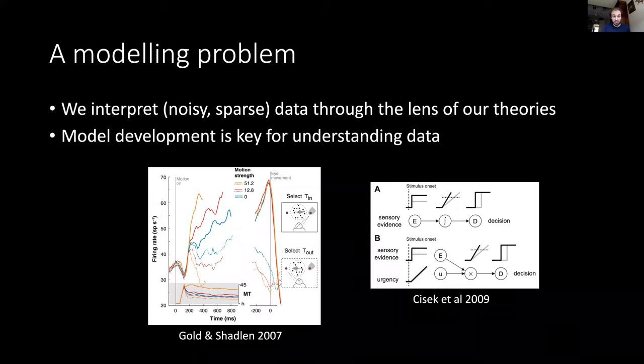Just moments before the monkey made its choice, these firing rates reached a common level of activity irrespective of the motion strength, irrespective of the difficulty, and irrespective of the decision time. At the time, these recordings were interpreted in terms of the diffusion decision model of decision making, but more recently there have been alternative proposals.